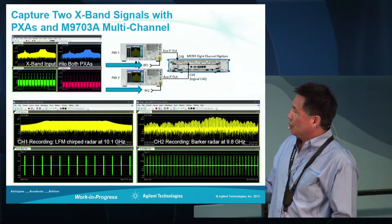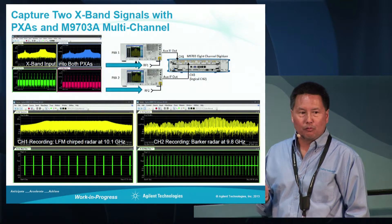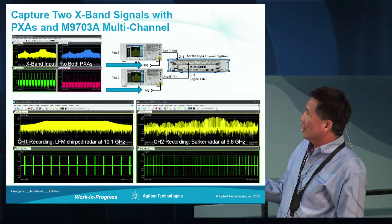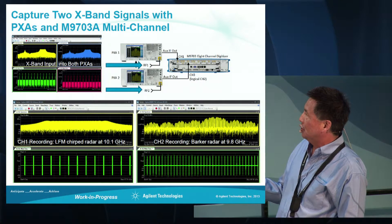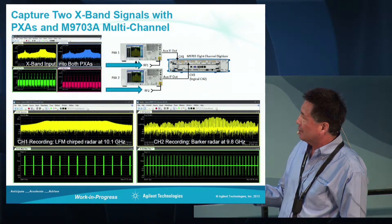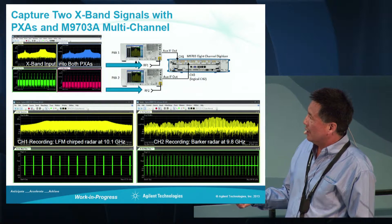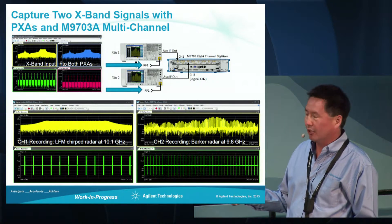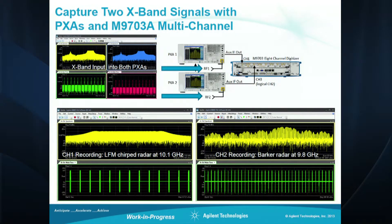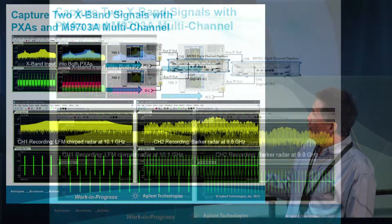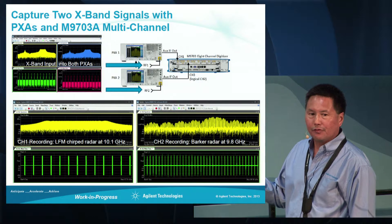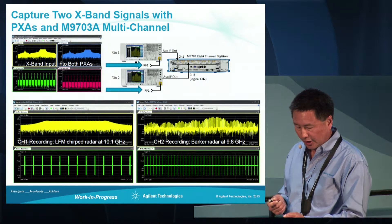This shows the test signals being captured with the digitizer going into two different PXAs. The left one is an LFM chirped radar signal centered at 10.1 GHz. The right one is a Barker coded radar waveform centered at 9.8 GHz. These are down converted by the PXAs, run into two different channels of the digitizer, and then digitized.